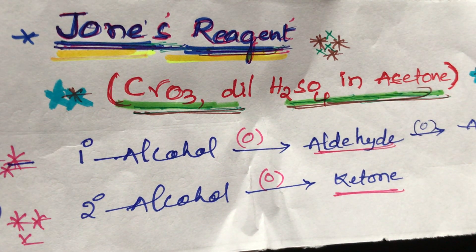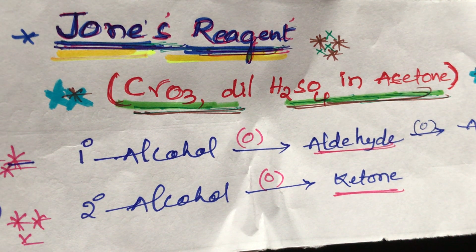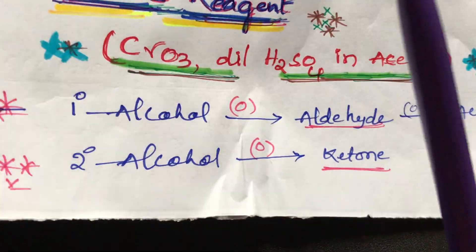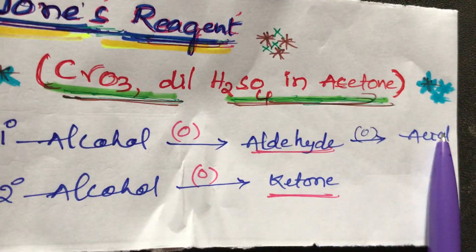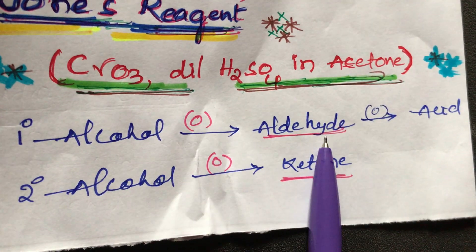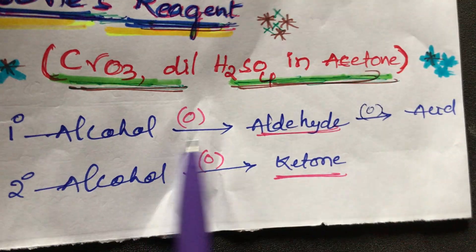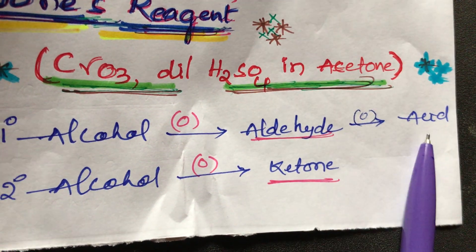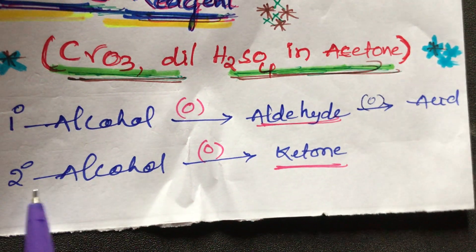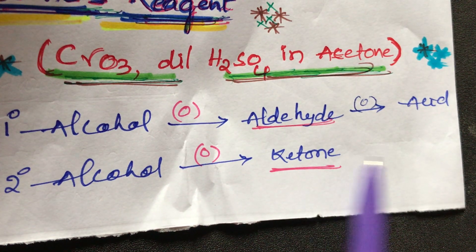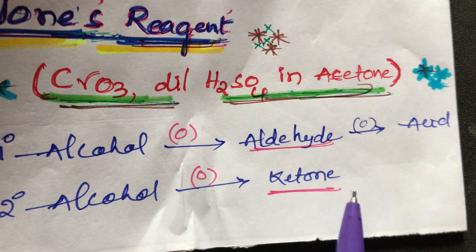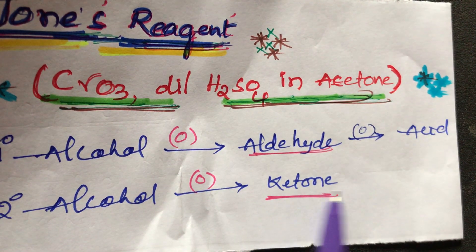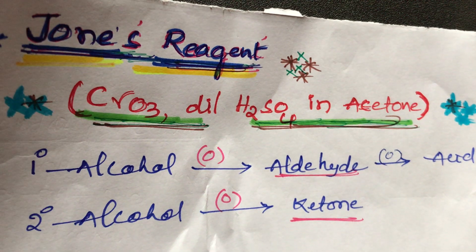According to Jones reagent, it oxidizes only primary and secondary alcohols. Primary alcohols on oxidation give aldehydes, and further oxidation gives acids. Secondary alcohols on oxidation give only ketones, and further oxidation of ketones with Jones reagent gives no reaction. Ketones cannot be oxidized with Jones reagent.